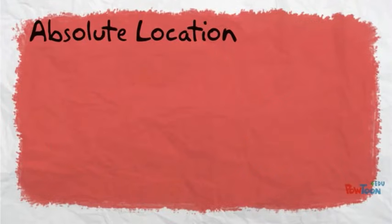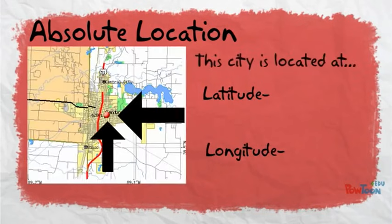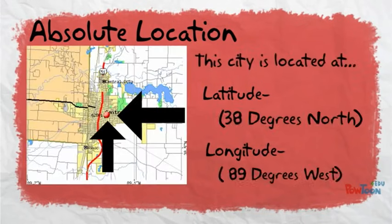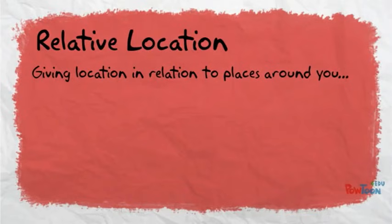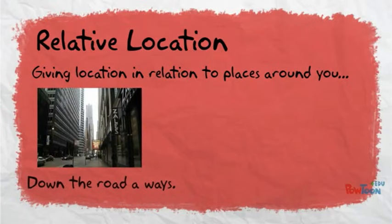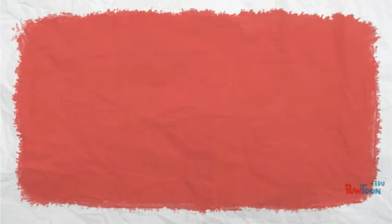Absolute location is using latitude and longitude coordinates to find your exact spot on Earth. Relative location means giving your location in relation to other places, like if you said, 'I'm down the road a ways,' or 'I'm next to the post office.'